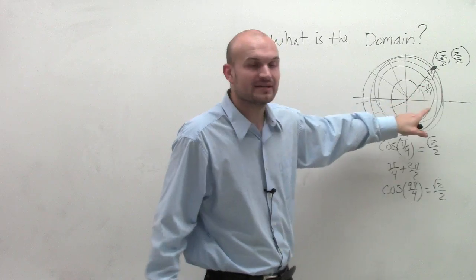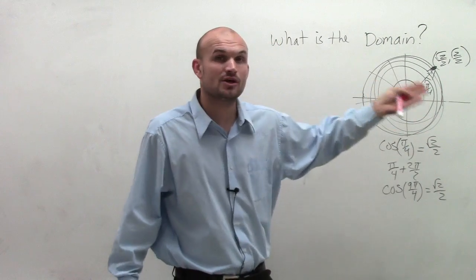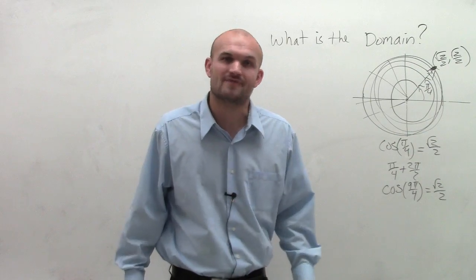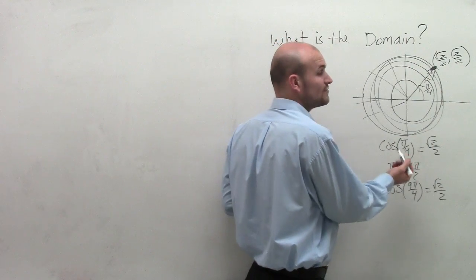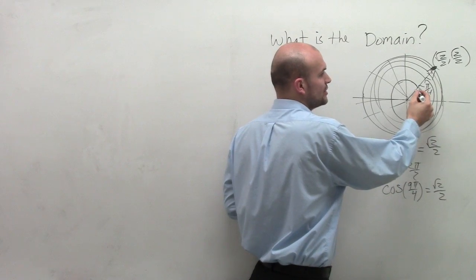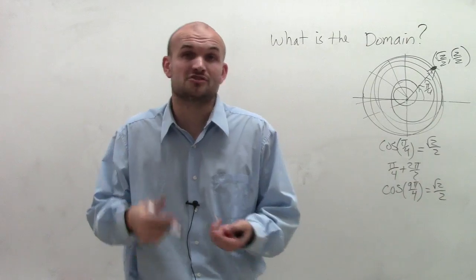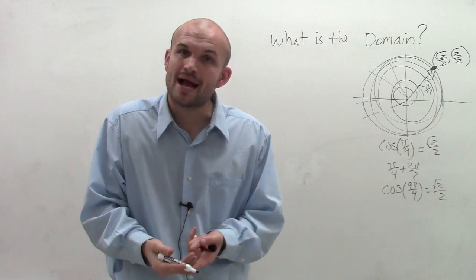Every point that we have on this unit circle, or even off of the unit circle, we can plug into our sine and cosine graph, and we're going to get an output value. And that even works for the negative value. Because instead of adding 2 pi, we could also subtract 2 pi.